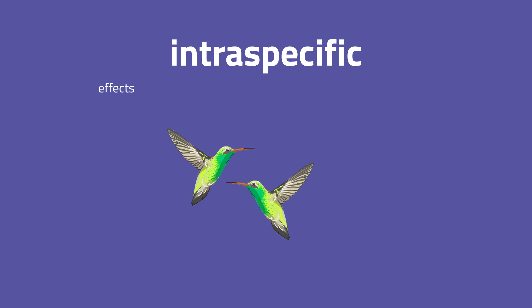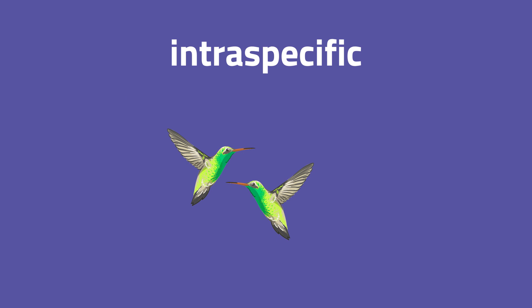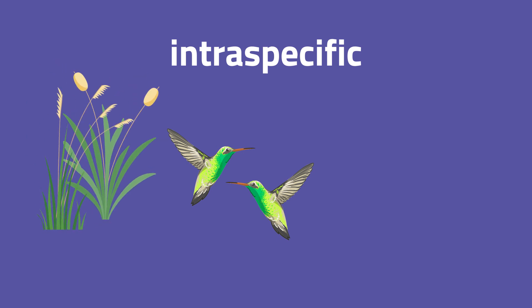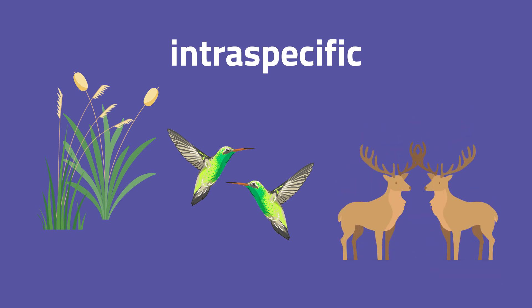Intraspecific interactions are the effects that individuals of the same species have on one another. For example, intraspecific competition occurs between members of the same species, like plants competing for light, hummingbirds competing for nectar and male deer competing for mates.